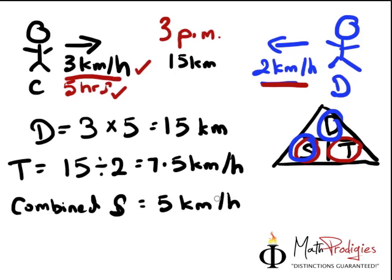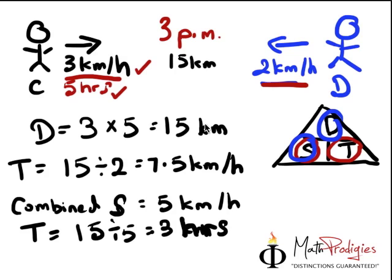And how do you find the time they will meet? All you have to do is, since you have the distance and the speed, find the time, and time is equal to distance divided by speed, which is 15 divided by 5, and you will get 3 hours. And hence 3 hours from 3 p.m., so 3 hours plus 3 p.m. is equal to 6 p.m., and that's the answer for part B.